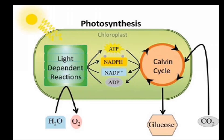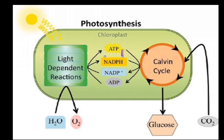Light-dependent reactions use sunlight energy and water as raw materials. Carbon dioxide is used in the Calvin cycle, along with ATP and NADPH2. The products are: oxygen, produced in the light-dependent reactions, and glucose, produced during the dark reactions or Calvin cycle.